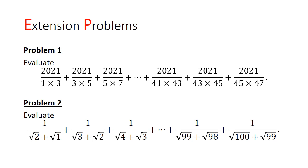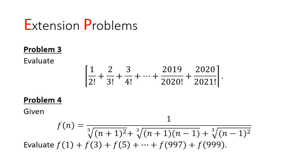With that, we've come to the end of the lecture. Here are some extension problems to test your understanding of telescopic sums. Problem 1: evaluate 2021 divided by 1×3 plus 2021 divided by 3×5, continuing until 2021 divided by 45×47 — this one involves partial fractions. Problem 2: evaluate 1 over (√2 + √1) plus 1 over (√3 + √2), continuing until 1 over (√100 + √99).